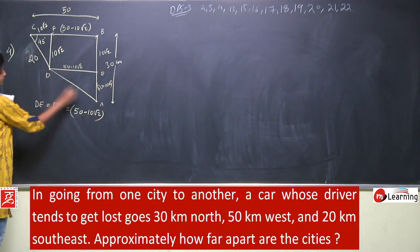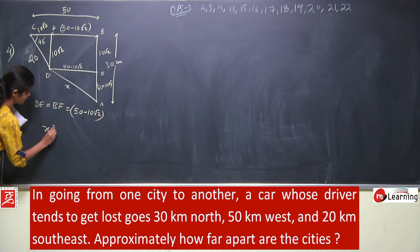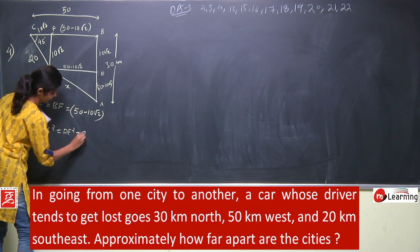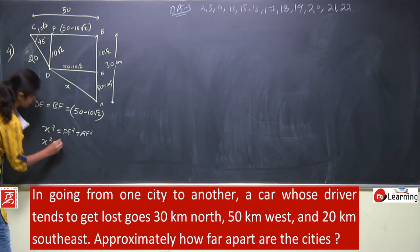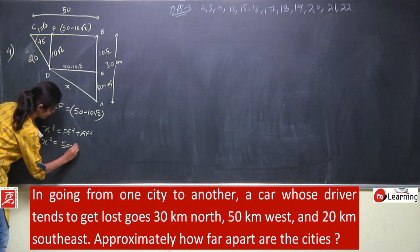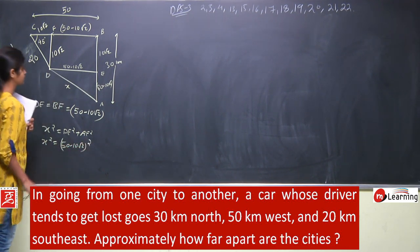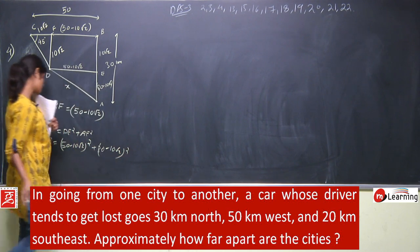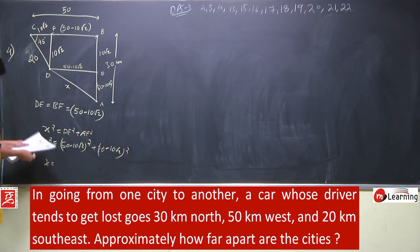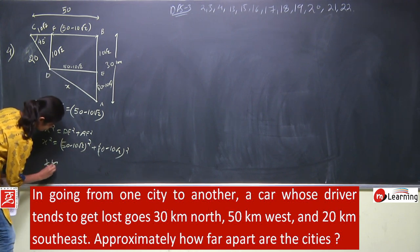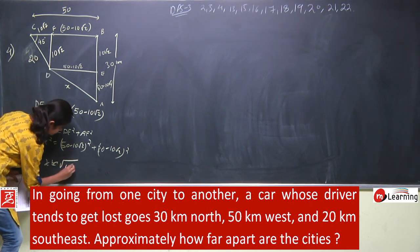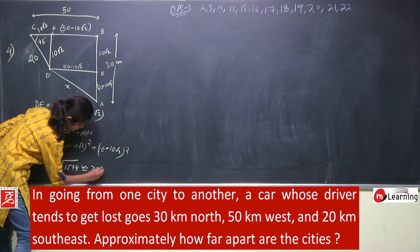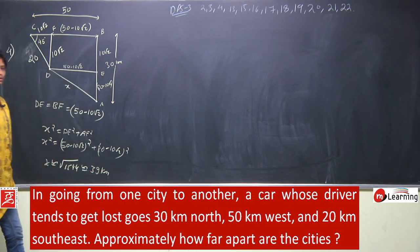Suppose AD is x. So x squared equals DE squared plus EA squared. x squared will be equal to (50 minus 10 root 2) squared plus (30 minus 10 root 2) squared. Solve it, you will get the value of x as approximately under root of 1554, that will be approximately equal to 39 kilometers. So your answer will be 39 kilometers.